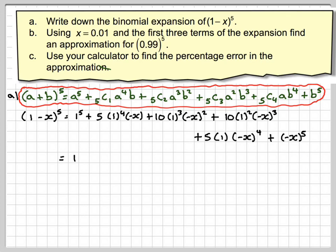So that's going to give you 1. 5 times 1 is 1 but minus x. Be careful, so it's 5 times 1 times minus x which is going to be minus 5x. Because when you square that minus sign it will be positive, plus 10x squared minus 10x cubed.